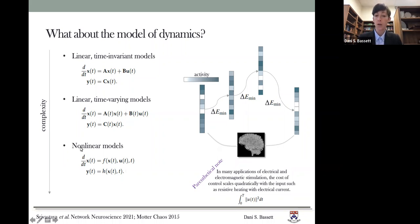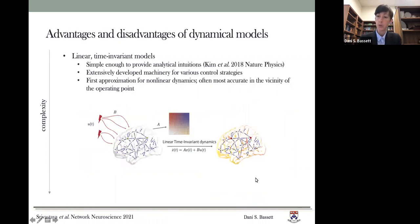And then adding even more complexity, we can go to fully nonlinear models. But in each of these cases, what we can do is estimate what U of t is needed to allow for a particular state transition or set of state transitions. And once we've identified what that U is, then we can compute an energy associated with that change. And we do that by suggesting that the cost of control or the energy required for control scales quadratically with the input U. So that allows us to assess the energy required for these state transitions.